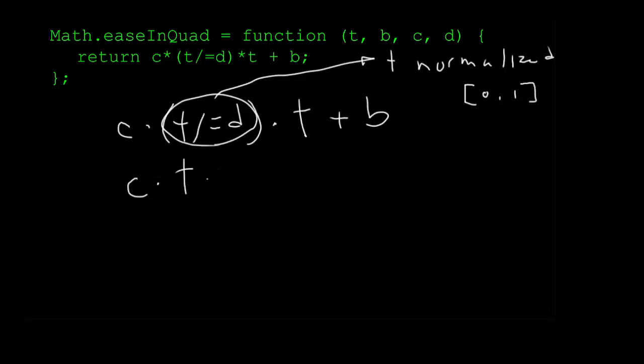After that initial division is done, the formula becomes c times t times t plus b. Or c t squared plus b. Or if you want to expand it out completely, c t squared plus 0 t plus b. And there's your quadratic form right there.